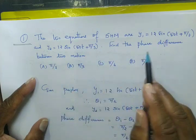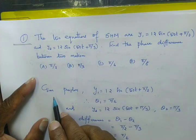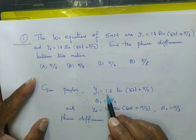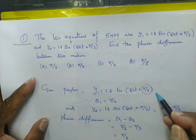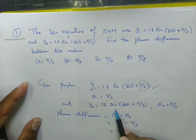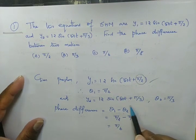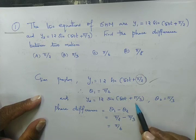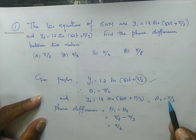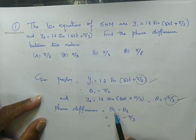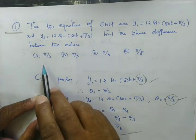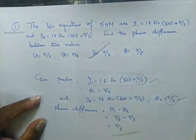We need to find the phase difference. Given: y1 equals 12 sin of 50t plus pi by 2, so theta 1 equals pi by 2 from the first motion. And y2 equals 12 sin of 50t plus pi by 3, so theta 2 equals pi by 3 from the second equation. The phase difference is theta 1 minus theta 2, which is pi by 2 minus pi by 3, giving pi by 6. So pi by 6 is the right option.